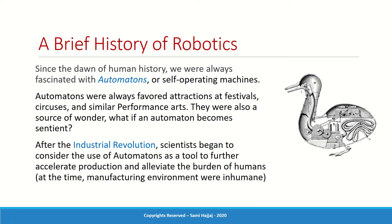After the Industrial Revolution in the 18th century, scientists began to consider using automatons as tools to further accelerate production and alleviate the burden on humans. At the time, conditions in factories were miserable — workers were really suffering. Some scientists thought, why can't we just build a machine to help rather than put humans through this suffering?